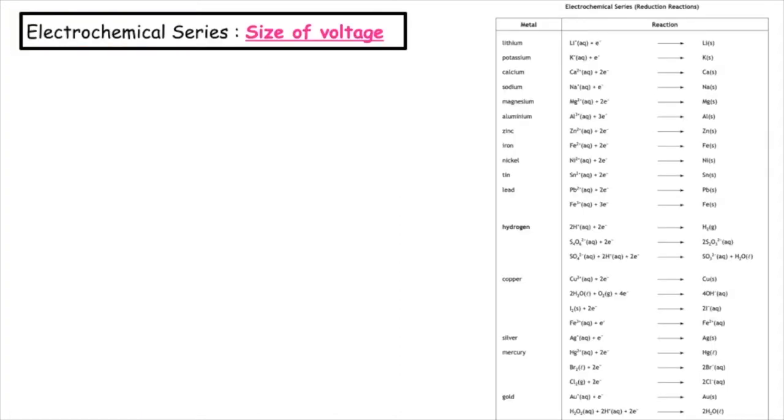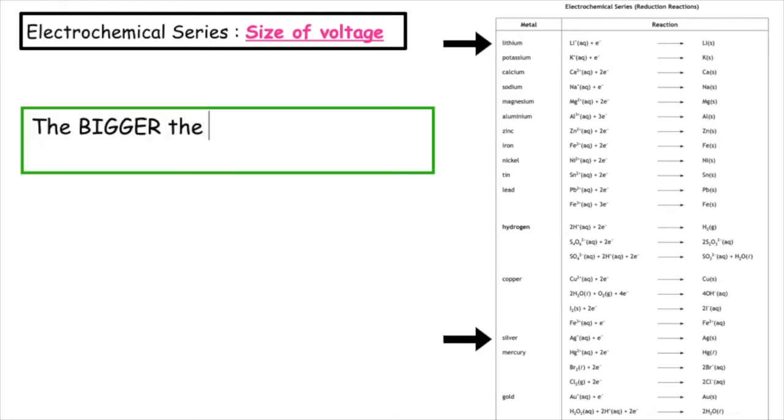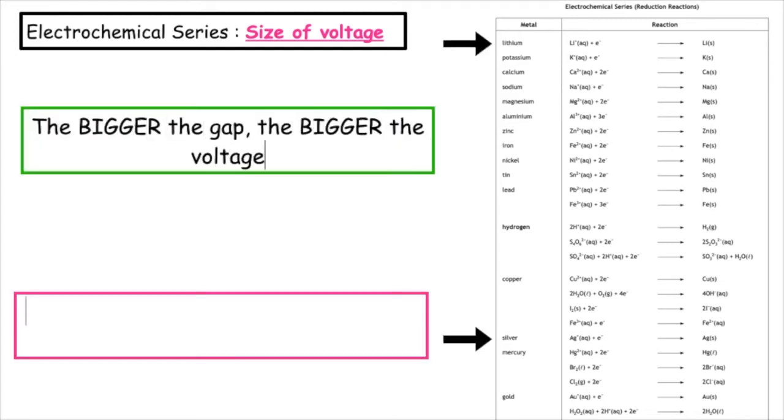In past paper questions, you'll often be asked about the size of the voltage. What you need to know is that when you select both of the metals in the electrochemical series, the bigger the gap, the bigger the voltage. The same thing goes, the smaller the gap, the smaller the voltage.